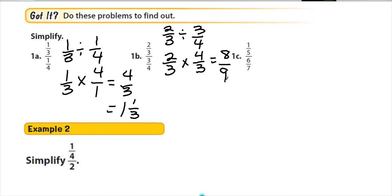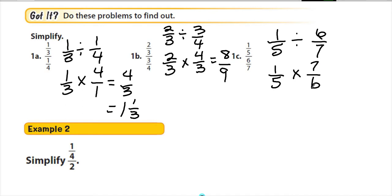Next: 2 thirds divided by 3 fourths. Keep, change, flip gives 2 thirds times 4 thirds. Nothing reduces, so multiply across: 2 times 4 is 8, and 3 times 3 is 9, giving 8 ninths. Then 1c is 1 fifth divided by 6 sevenths, which gives 1 fifth times 7 sixths. Nothing reduces, so 1 times 7 is 7, and 5 times 6 is 30 — answer: 7 thirtieths.